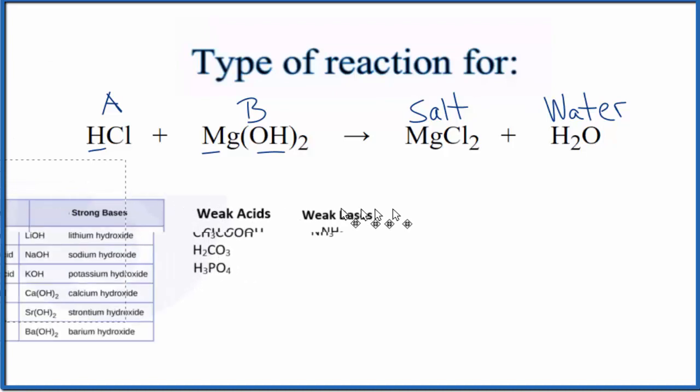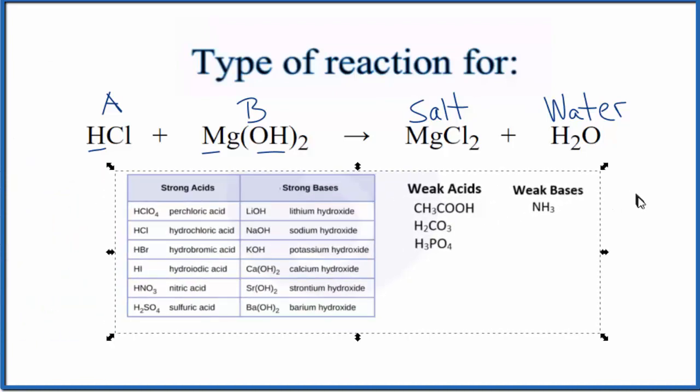You might find it useful to memorize this table here of really common acids and bases. For the acids, we have our hydrochloric acid right here, and then Mg(OH)₂. That's not on our list, but we can see it has these OHs here. Mg(OH)₂ is actually sometimes considered a strong base, sometimes considered a weak base. But that hydroxide tells us it is a base. Then we have our salt and our water.